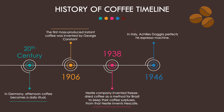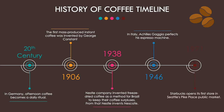1946: in Italy, Achilles Gaggia perfected his espresso machine. 1971: Starbucks opened its first store in Seattle's Pike Place Public Market. From then on, coffee has become huge and evolved all around the world.